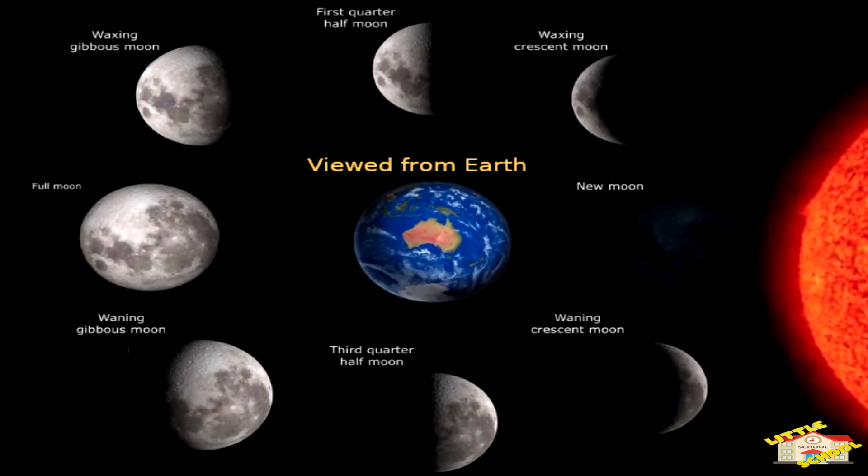When viewed from Earth, the moon looks different at times. These varying appearances are called phases. As the moon orbits around the Earth, the phase changes.